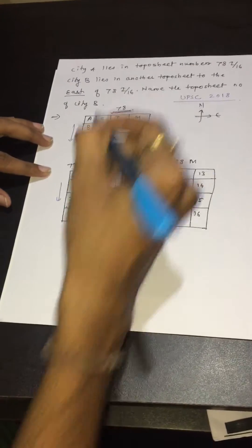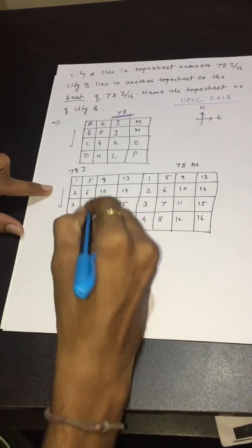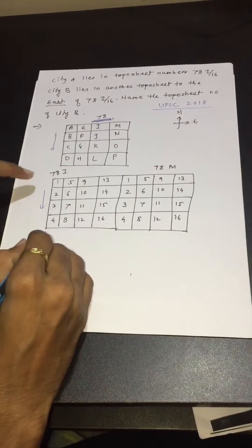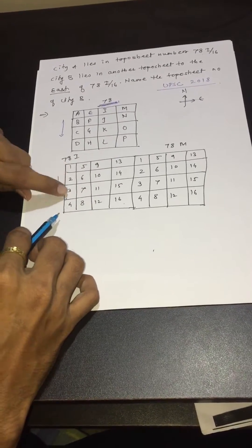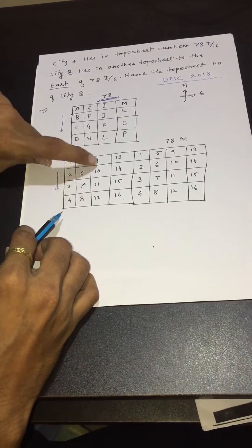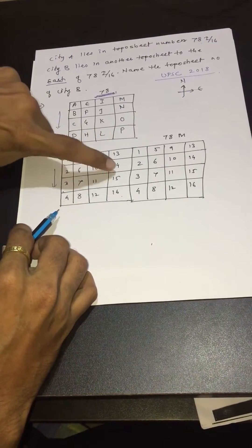Consider this toposheet number is 78. Again draw a square and divide it into 4 rows and 4 columns. Now label it 1, 2, 3, 4, 5, 6, 7, 8, 9, 10, 11, 12, 13, 14, 15, 16.